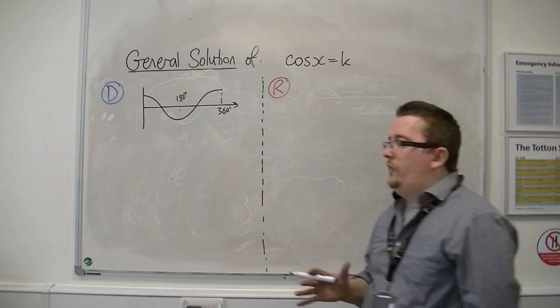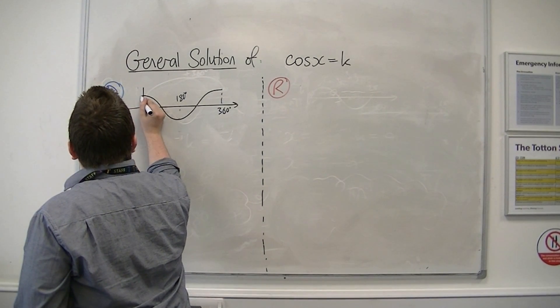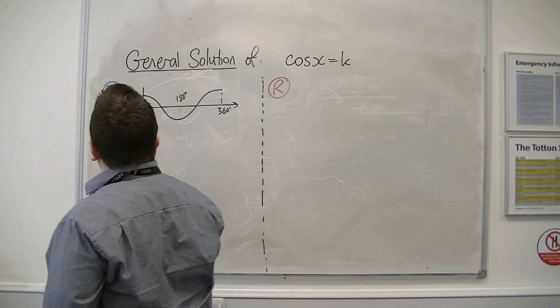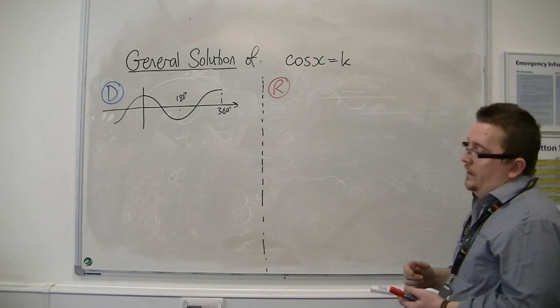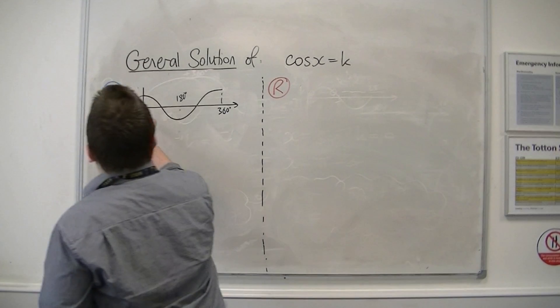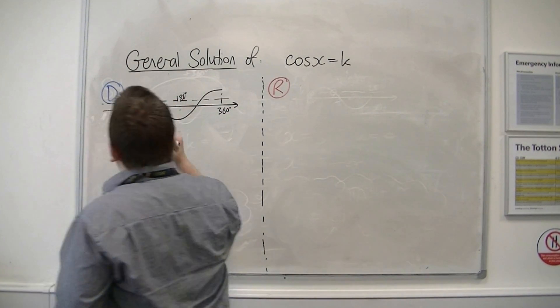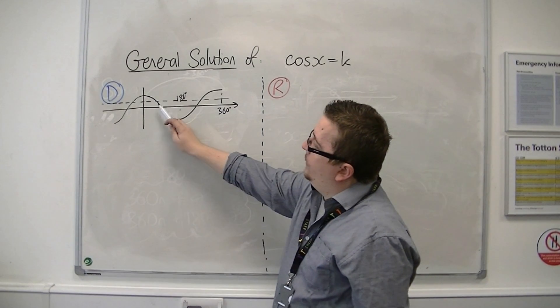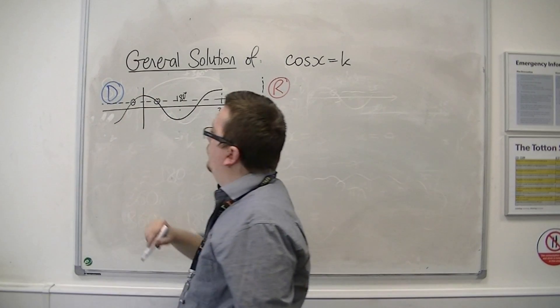Now, it's probably easier to see this if we extend it into the negative. I'm just going to draw part of it in the negative there. So if I'm looking at k on the y-axis, then what I really want to look at is this portion here. And you can see that there are two solutions there.